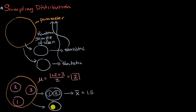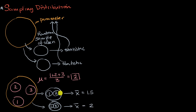Then I can do it again. Let's say I get a one and a three. When I calculate the sample mean — the mean of one and three — it's going to be equal to two. Let's think about all of the different scenarios of samples we can get and what the associated sample means are going to be, and then we can see the frequency of getting those sample means.